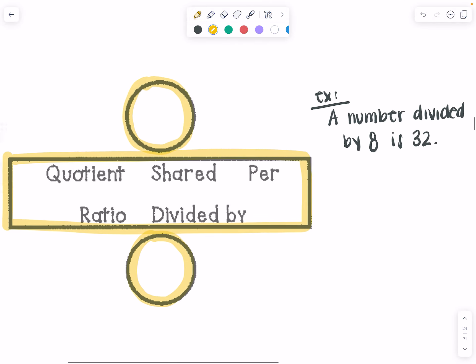Okay, division. Any number inside of that is going to alert you for division. A number divided by 8 is 32. So I've got a number divided by, it's going to be division, so n or x divided by 8 equals 32.